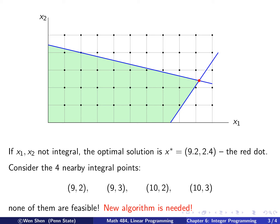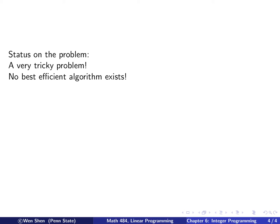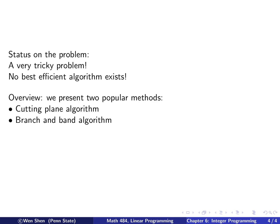This hints to us that the problem is probably more complicated, and we definitely need to design some new algorithms. So before we dive into the algorithms, let's look at the current status. This is actually a very tricky problem, and there is no single most efficient algorithm that is universally accepted. In this chapter, we will present two popular methods: the first is called the cutting plane algorithm, and the second is called the branch and bound algorithm.